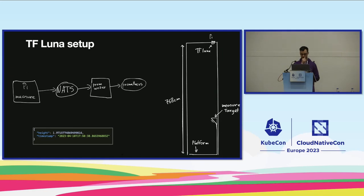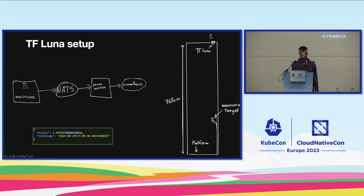This is the setup: the TF-Luna is mounted at the ceiling of the elevator shaft. The full distance is about seven and a half meters but the top of the platform is five and a half meters. In software there's a measure component written in Rust that runs on the Raspberry Pi, takes the actual measurements, then sends them through NATS, and they are picked up by a writer I wrote in Go that does remote writes into Prometheus.